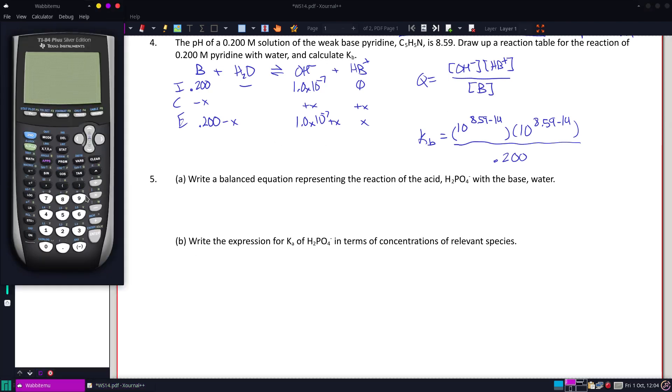All right, so clear that out. 10 raised to the power of 8.59 minus 14, and we're essentially going to square that and then divide by 0.2. And we get a Kb of 7 point, let's see, we can have just two significant figures from the 8.59, so 7.6 times 10 to the negative 11th.